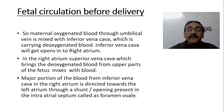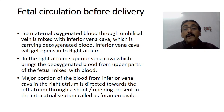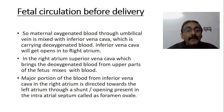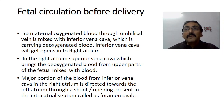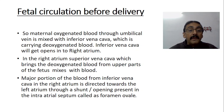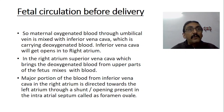The inferior vena cava opens into the right atrium, so blood from the maternal side comes to the right atrium. In the right atrium, the superior vena cava, which brings deoxygenated blood from the upper portion of the fetal body, is also present — again impure blood. This maternal blood further mixes with the impure blood from the superior vena cava in the right atrium. The major portion of blood from the inferior vena cava in the right atrium is directed towards the left atrium through a shunt or opening in the interatrial septum called the foramen ovale.